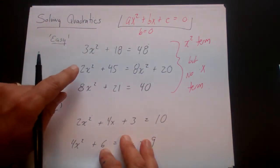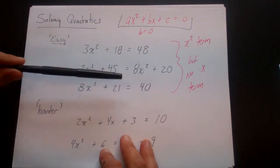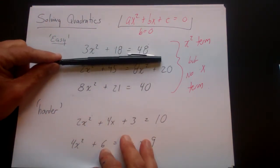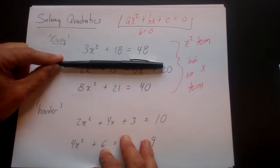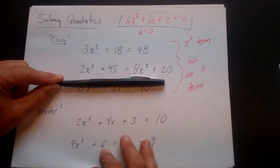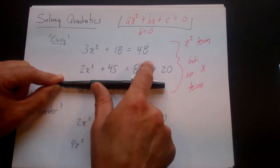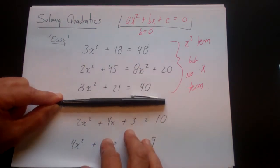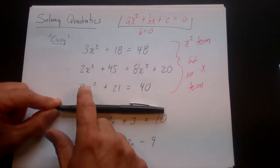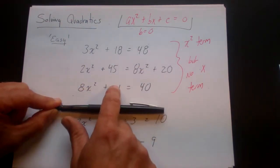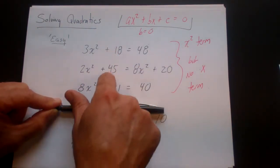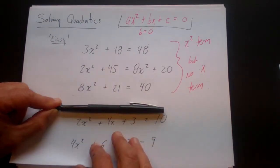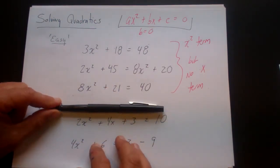Here are three of the type problems we're talking about. In this first problem, we have an x squared term but no x term. In this one, we actually have two x squared terms but still no x term. And the same thing here — we have an x squared term but no x. All three of these problems are relatively simple and can be solved by simply finding the square root.